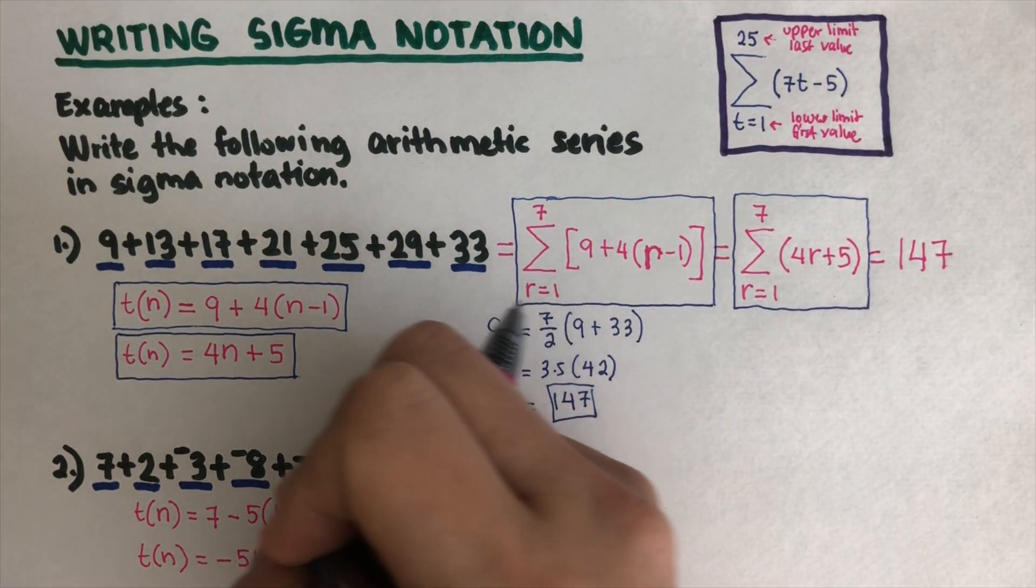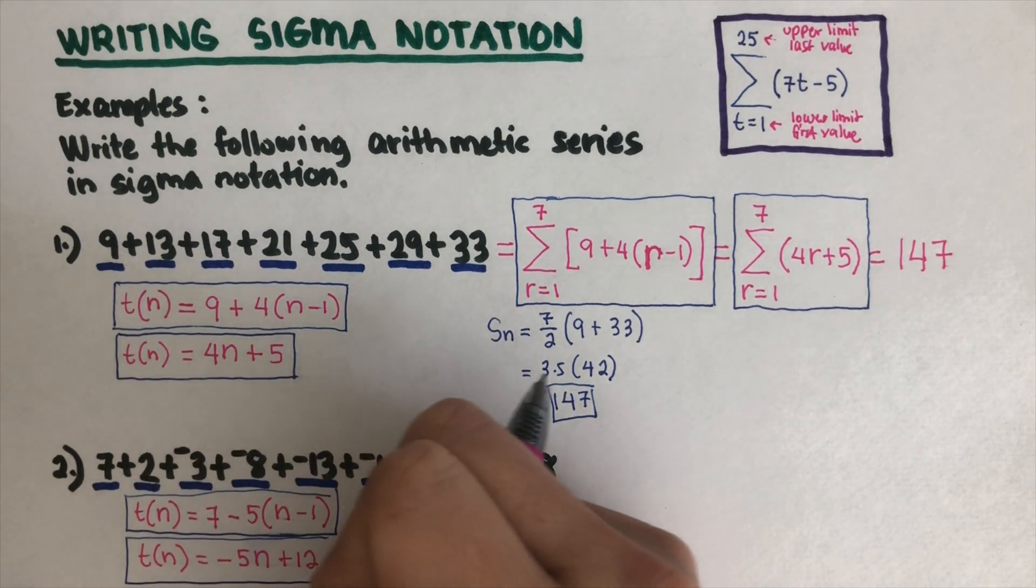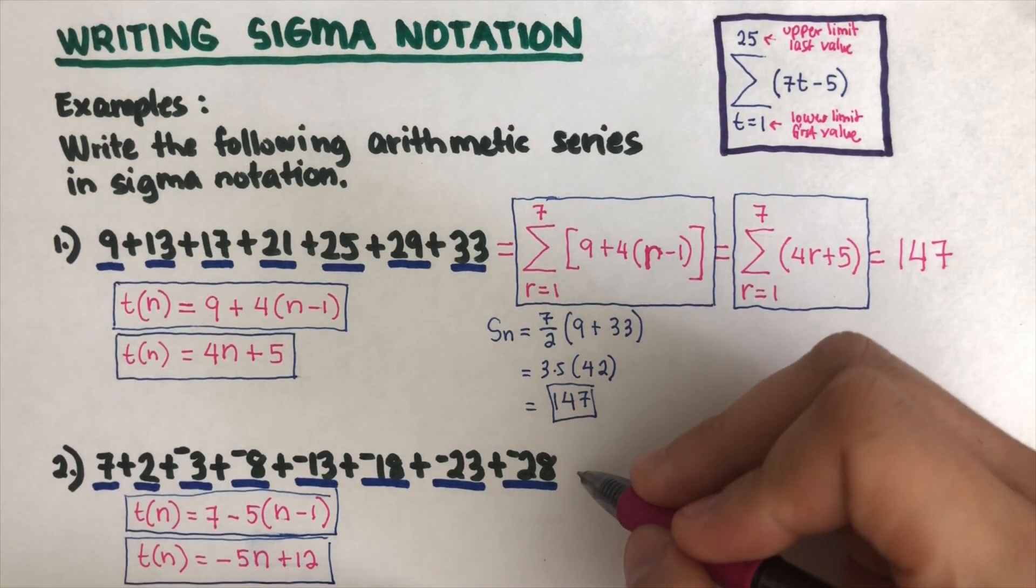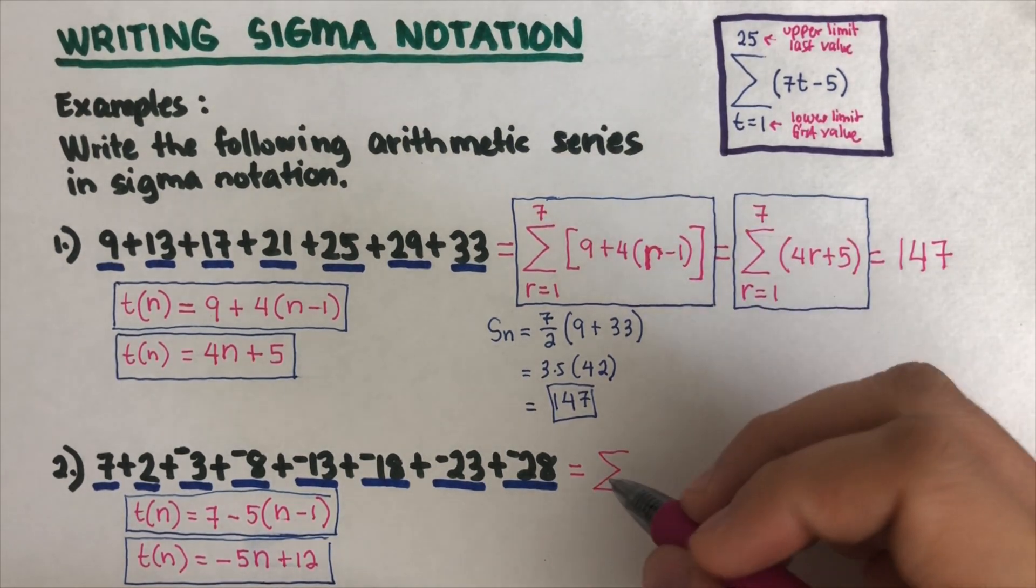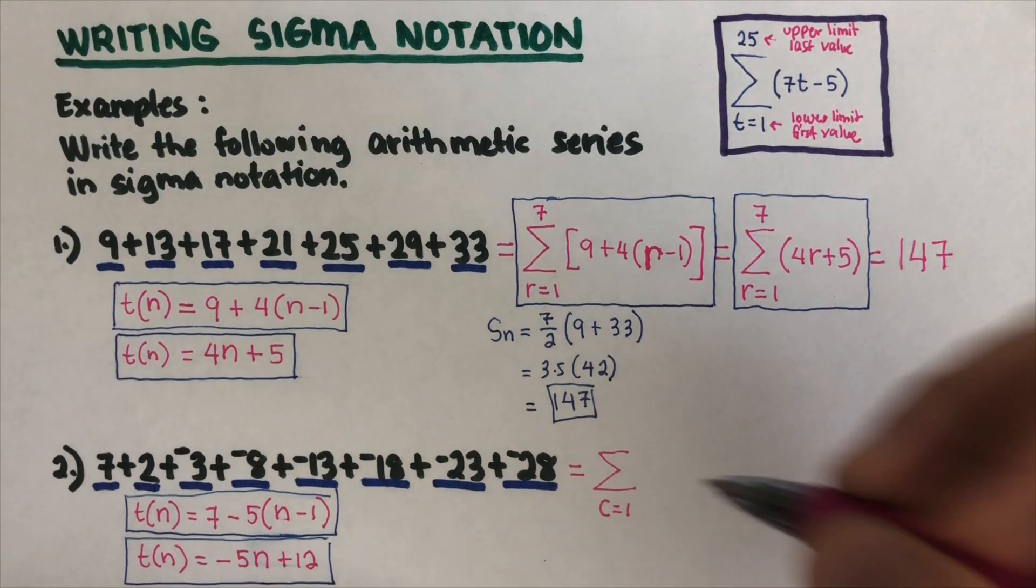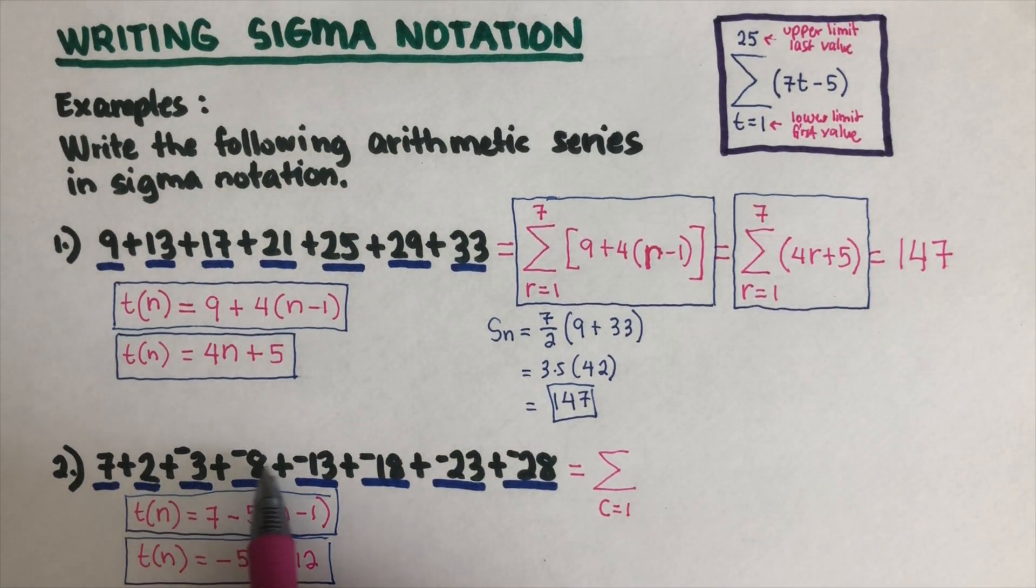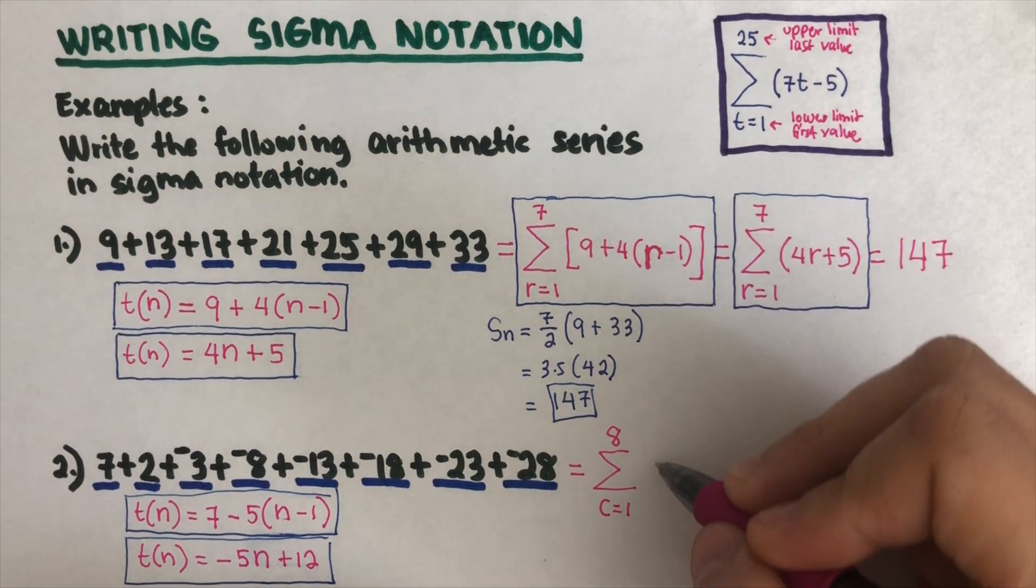I'm going to put that in a box. We're now ready to evaluate this. I write Sigma and let's use c. c is equal to 1, and there are 1, 2, 3, 4, 5, 6, 7, 8 terms, so 8. I can write the first equation: 7 minus 5 parentheses c minus 1.